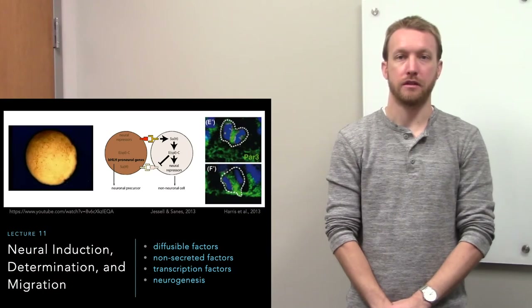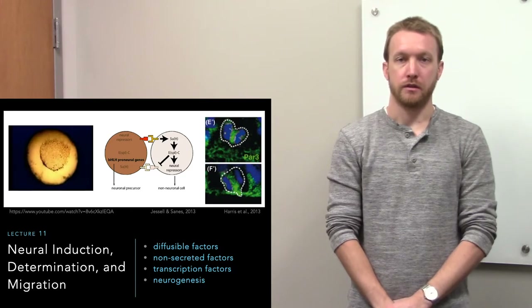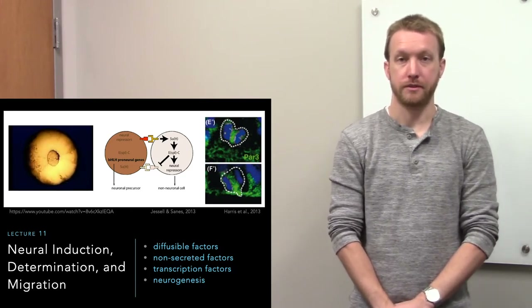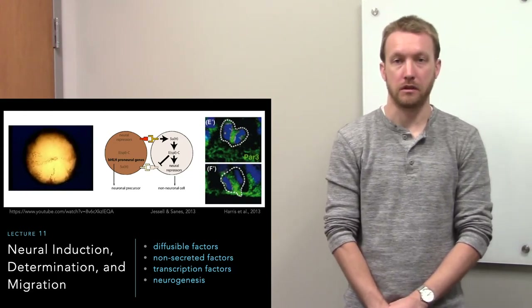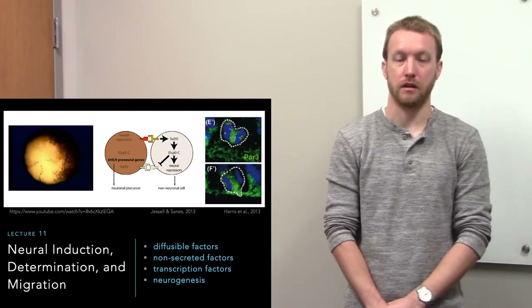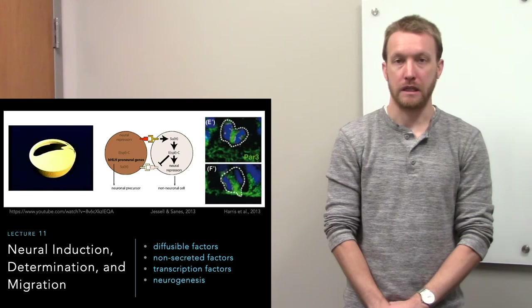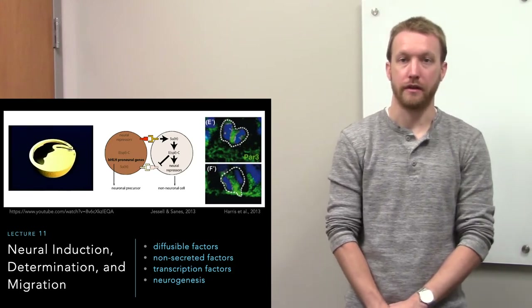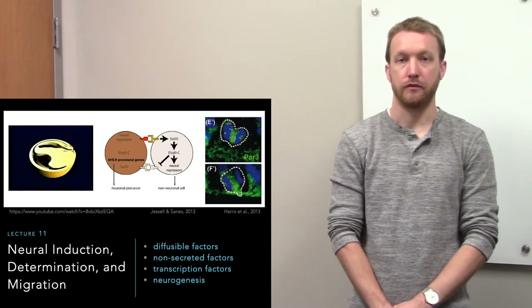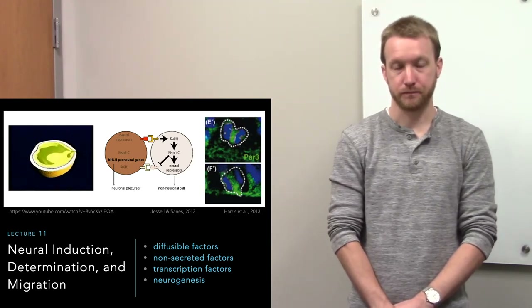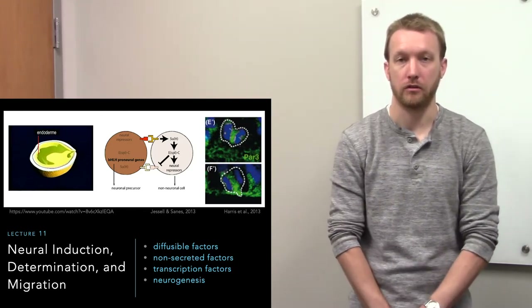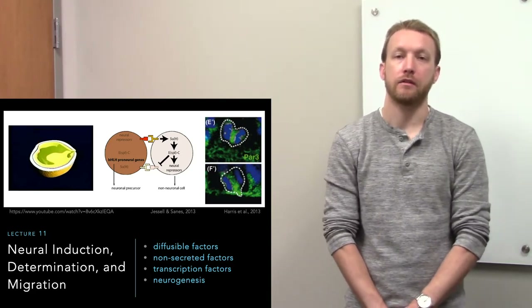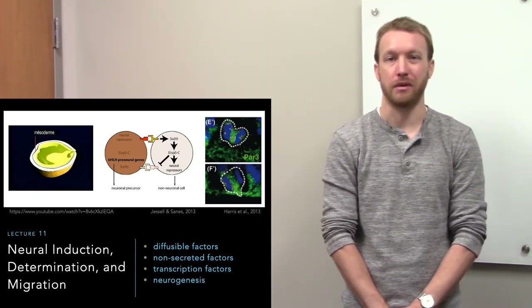Up until now we've just assumed the nervous system was already built and put together — neurons had already become neurons and formed synapses. But of course we all arise from a single cell. This turns into a little ball of cells, then a disk with two and then three layers. We'll distinguish the outer ectodermal layer into future neurons and future epidermis. Those future neurons will go through neurulation to separate from the overlying epidermis, then figure out whether they're at the head or the tail, the bottom or the top.